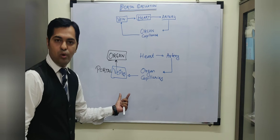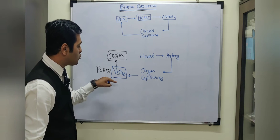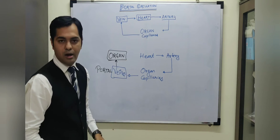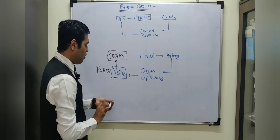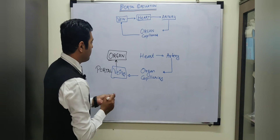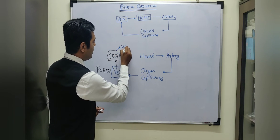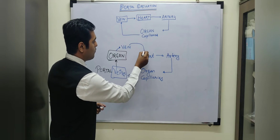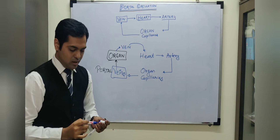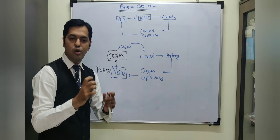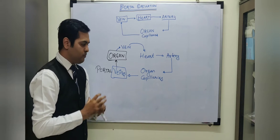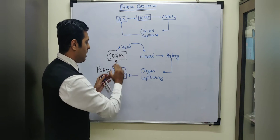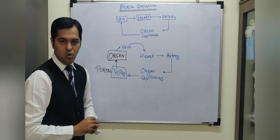A portal vein is the one which carries the blood to some other organ instead of carrying it to the heart. From this second organ, there will be a vein that arises, and now this vein is like a normal vein which carries the blood towards the heart. So this is the first definition of a portal vein: instead of carrying blood towards the heart, it carries it to another organ.